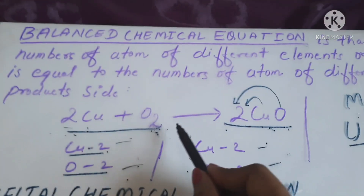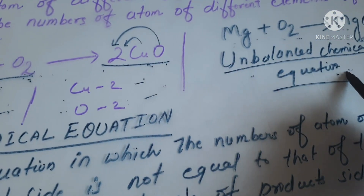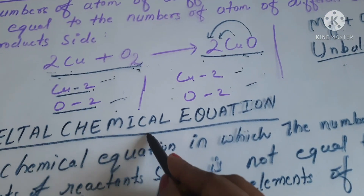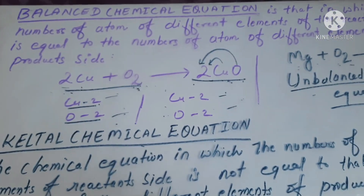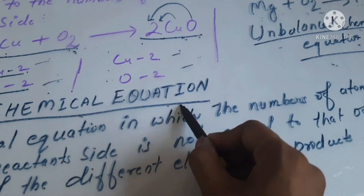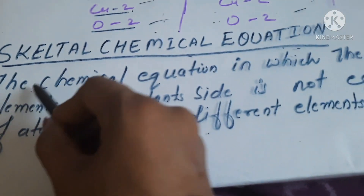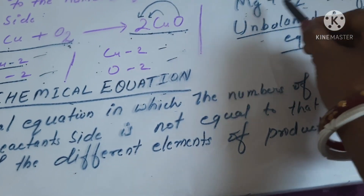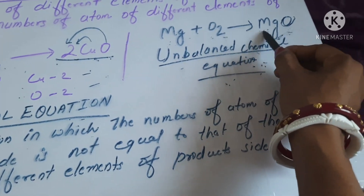Before balancing any chemical equation, we have to write an unbalanced chemical equation. That's why we also call an unbalanced chemical equation a skeletal chemical equation. The chemical equation in which the number of atoms of different elements on the reactant side is not equal to the number of atoms of different elements on the product side.